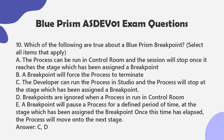Question 10: Which of the following are true about a Blue Prism breakpoint? Select all items that apply. a. The process can be run in control room and the session will stop once it reaches the stage which has been assigned a breakpoint. b. A breakpoint will force the process to terminate. c. The developer can run the process in studio and the process will stop at the stage which has been assigned a breakpoint. d. Breakpoints are ignored when a process is run in control room. e. A breakpoint will pause a process for a defined period of time at the stage which has been assigned the breakpoint; once this time has elapsed the process will move on to the next stage. Answer: C, D.